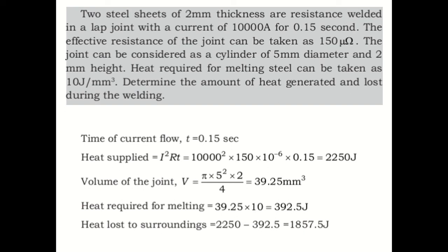With a current of 10,000 amperes for 0.15 seconds. The effective resistance of the joint can be taken as 150 micro-ohms. The joint can be considered as a cylinder of 5mm diameter and 2mm height. The heat required for melting steel can be taken as 10 joules per millimeter cube. Determine the amount of heat generated and lost during the welding.